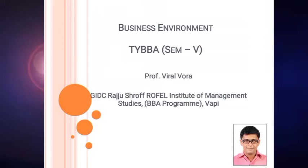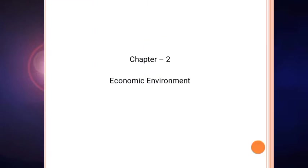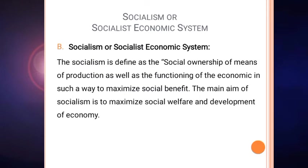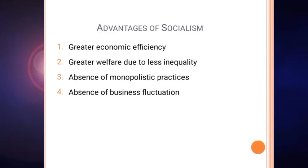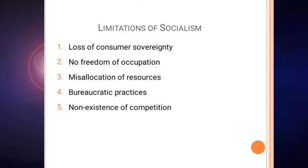Good morning everyone and welcome to today's session. In the last session we were discussing about socialism and its advantages. Socialism is defined as the social ownership of means of production, and the aim is to maximize social welfare and public benefit — social benefit is the main aim. We also discussed the various features and advantages of socialism. Now today we will discuss about the limitations of socialism.